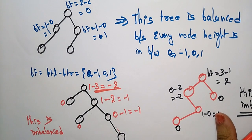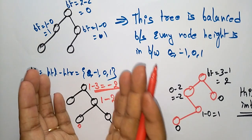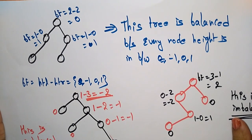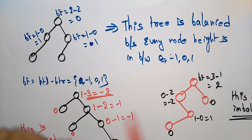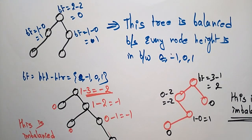If the tree is imbalanced based on the balance factor, we perform rotations to make it a balanced tree. The main concept is: to make an imbalanced tree balanced, we have to perform rotations. That will be explained in the next video — how to perform rotations on an imbalanced tree and construct an AVL tree by making it balanced.